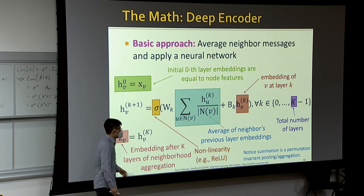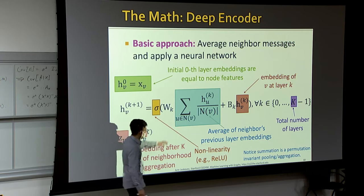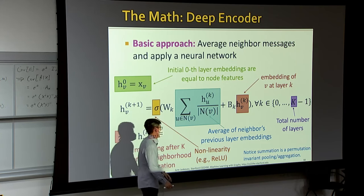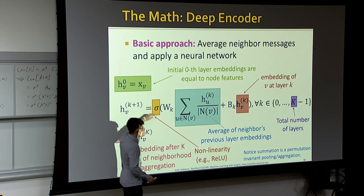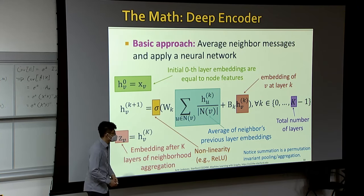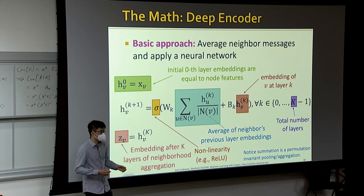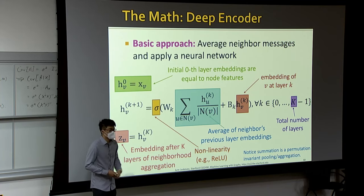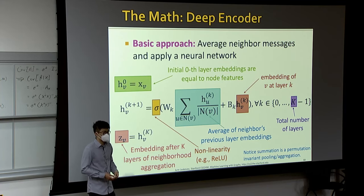A student asks: why average the previous-layer embedding of neighbors rather than just the zero-layer (raw) features? The answer: using previous-layer embeddings is what makes the network deep, giving each node a richer, interleaved representation. Using only zero-layer features would be equivalent to a shallow, one-layer network that directly transforms raw inputs. The questioner's idea actually resembles DenseNet, where layers also connect back to the raw input.